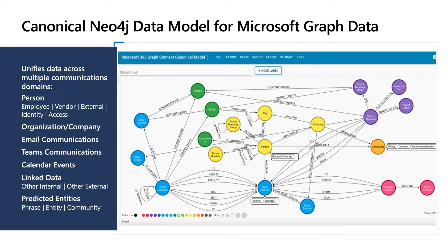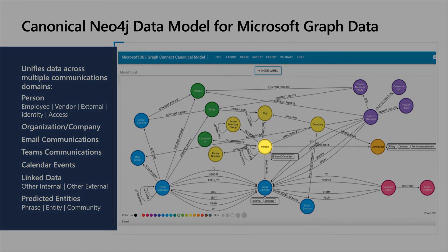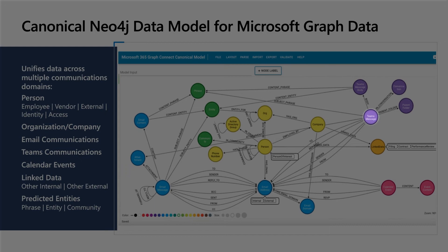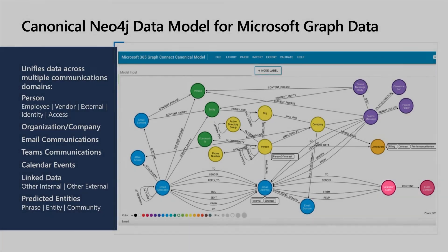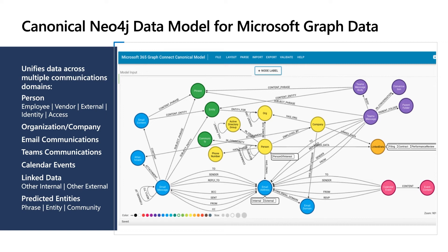One of the things that's really great about what we're collaborating on is that the shape of the Microsoft Graph Data Connect data itself is strictly uniform, which means we can build a canonical graph data model in Neo4j that extracts all of the main entities from the data and makes it easy to import into Neo4j. Some of the entities we've extracted include things like person, Active Directory, email, Teams messages, calendar events, and SharePoint documents. We can then enrich this model using NLP-derived information such as phrase, entity, or sentiment. And of course, you can bring in any internal or external data using this canonical data model as a starting point for building out your use case.